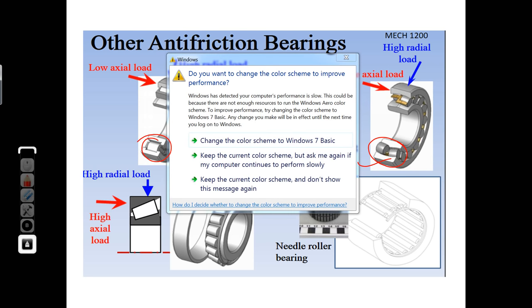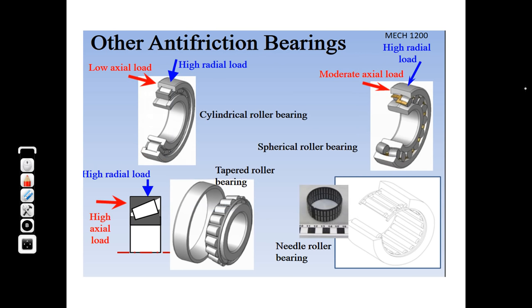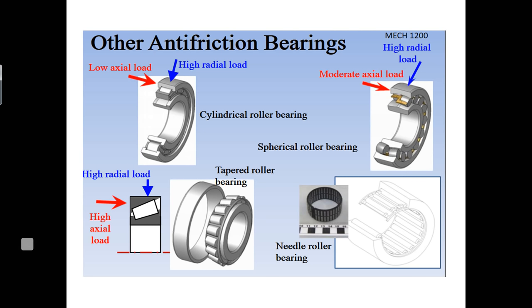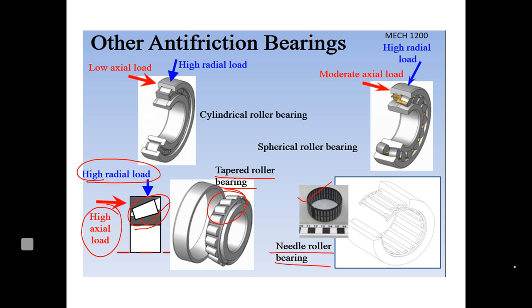The next most common bearing in the automobile industry is the taper roller bearing. The rolling element is in a tapered cylindrical format — the taper roller. Its capacity is ideal: it can take both high axial load and high radial load. That is why taper roller bearings are used in pairs in most automobiles. The last one is needle roller bearing — actual images show the needle-like rolling elements with separator and cage.